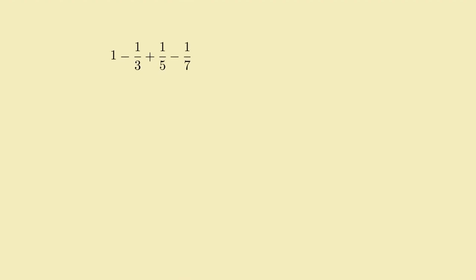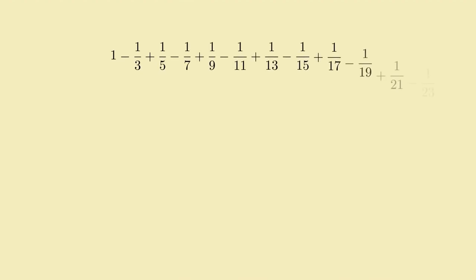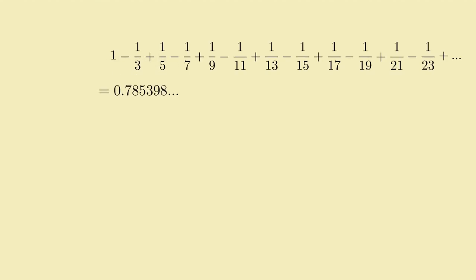Take 1, subtract a 3rd, add a 5th, subtract a 7th, add a 9th, and so on forever, alternating adding and subtracting 1 divided by all the odd numbers, and you get this — which happens to be equal to pi over 4. Definitely a pretty sweet result, though we won't dwell now on why pi shows up here. It would be... a tangent.